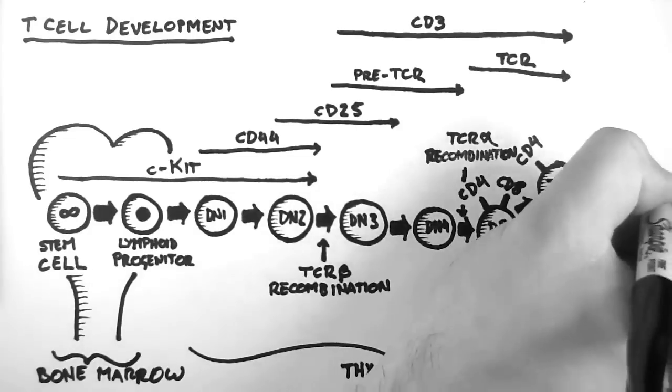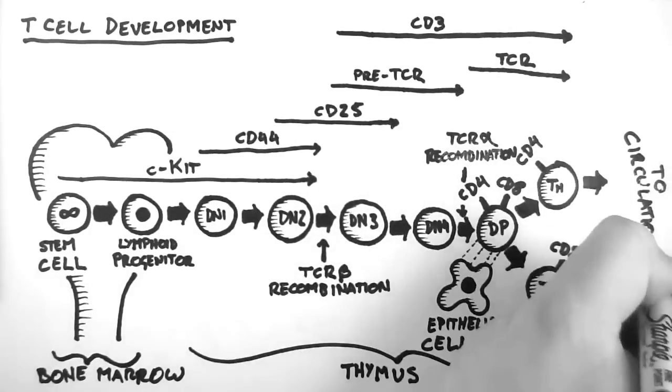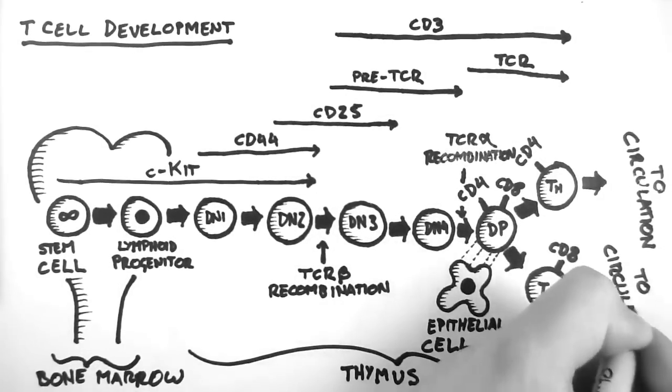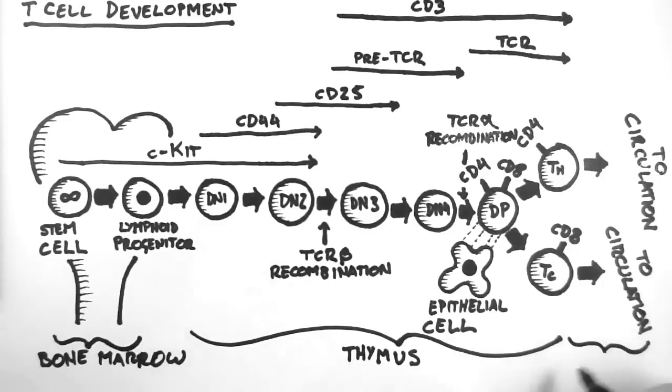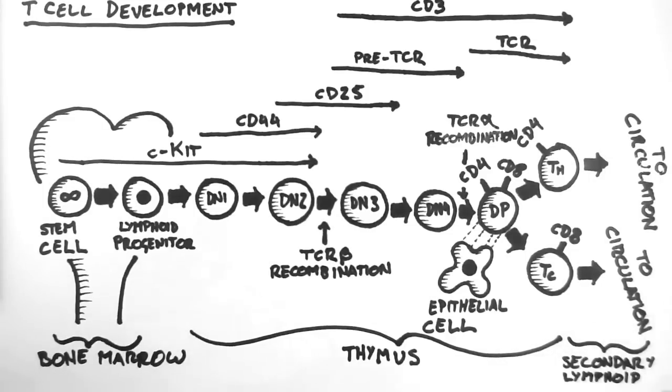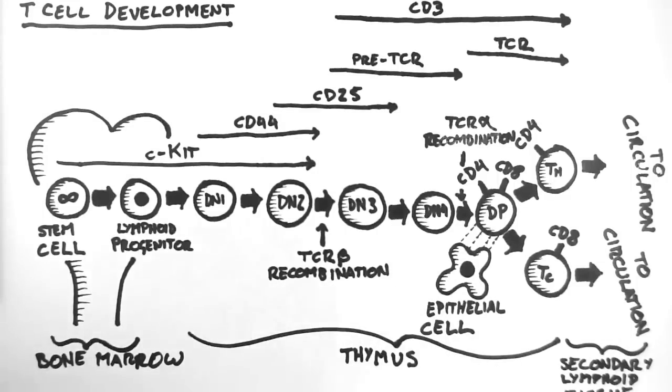At which point the helper T cells and the cytotoxic T cells then migrate into the circulation and onto secondary lymphoid tissues. These include lymph nodes, the spleen, and mucosa associated lymphoid tissue, also known as MALT. And that's an overview of T cell development.